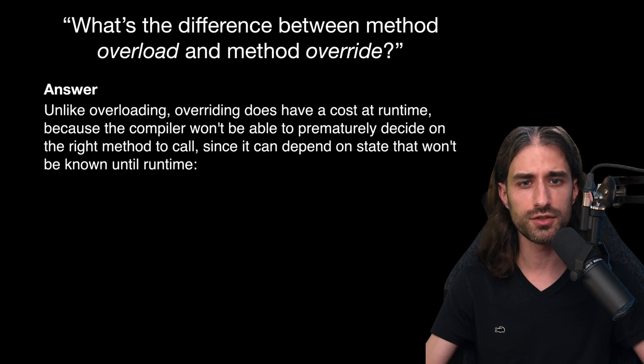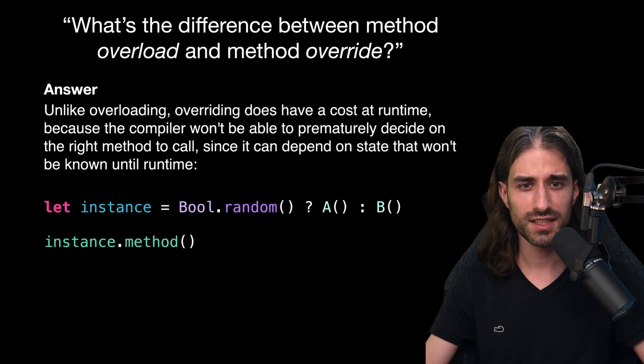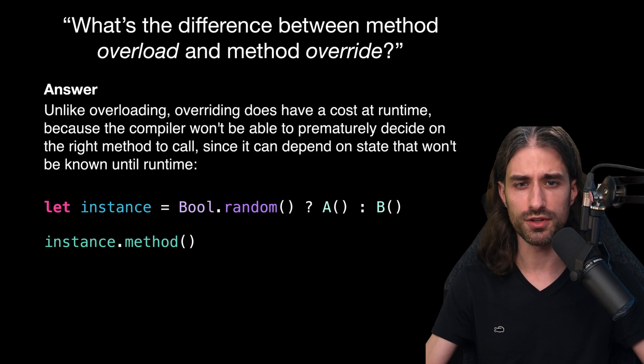Here's a typical example of such a situation. You can see that here the actual type of the instance is decided randomly at runtime, and so the compiler has no way at compile time to decide in advance which implementation should be called. This means that the compiler needs to create the code that will at runtime check the actual type of the instance and trigger the right method. Of course, this additional code will have a cost at runtime.